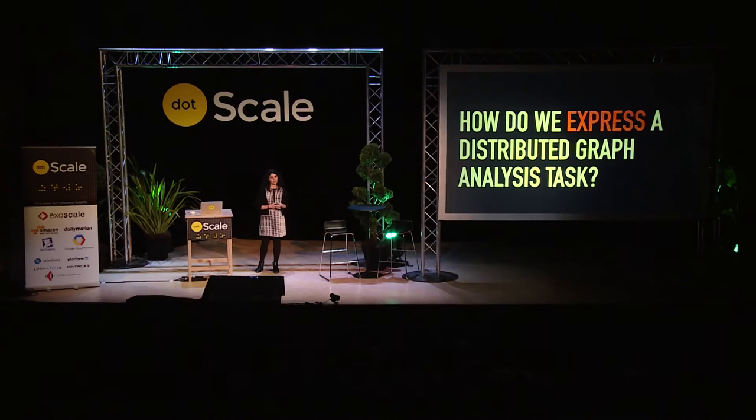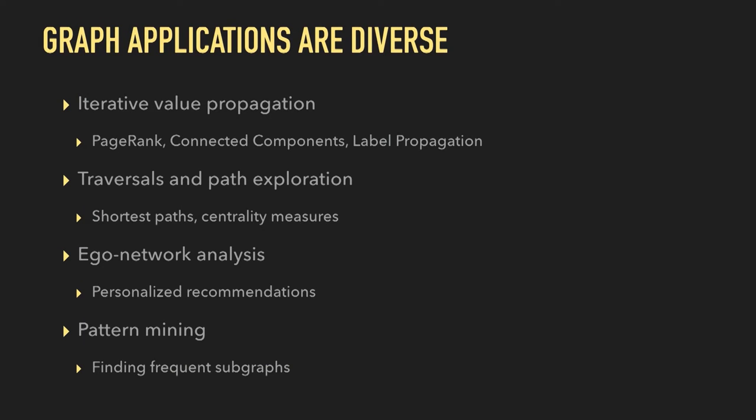Once you have decided that yes, this is what I need — distributed graph processing — you have to start writing your application. But how do we express a distributed graph processing application? Writing distributed programs is inherently hard. But writing graph programs is even worse, because graph applications are very diverse and have very different requirements. By saying I do graph processing, you might mean iterative value propagation like PageRank, or graph traversals, a very different pattern, or ego network analysis, or pattern mining — finding subgraphs. These are all very different categories of applications.